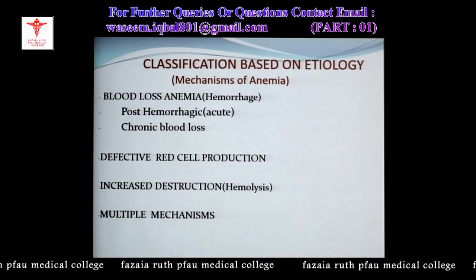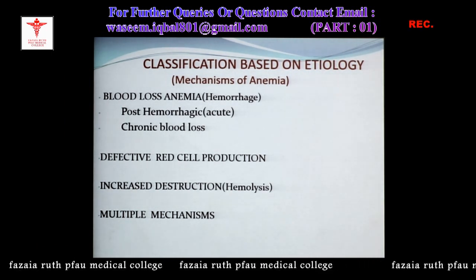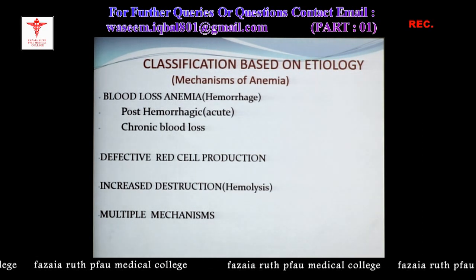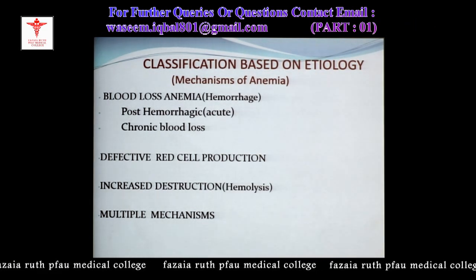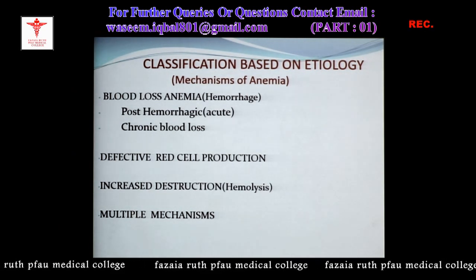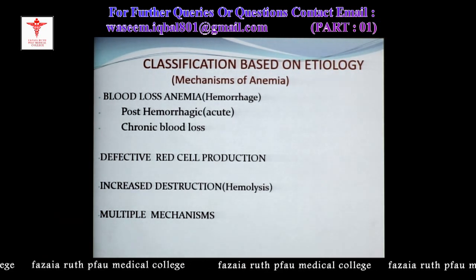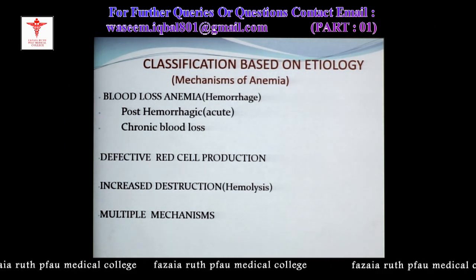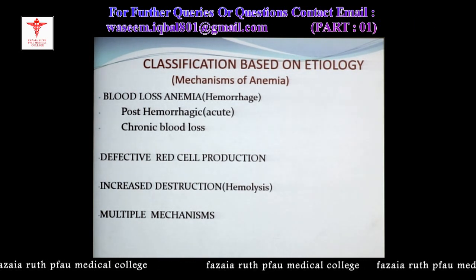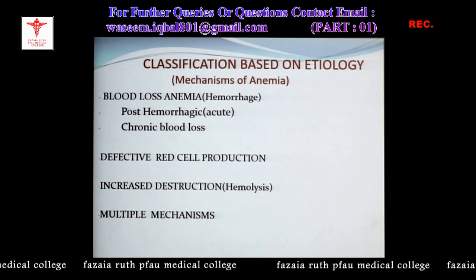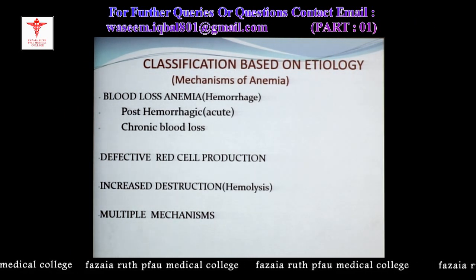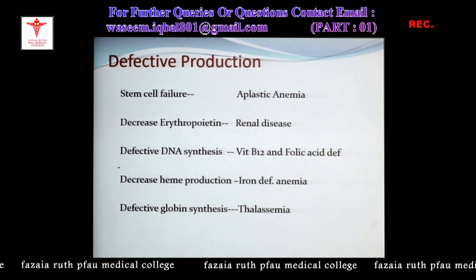The second classification is based on underlying mechanisms. It includes: blood loss anemias — acute hemorrhage causing loss of RBCs and decrease in hemoglobin, or chronic blood loss over months and years (e.g., bleeding peptic ulcers, hemorrhoids, worm infestations, or carcinoma of the large intestine causing slow blood loss in stools leading to iron deficiency anemia). Then there is defective red cell production, increased destruction (hemolysis), and multiple mechanisms.